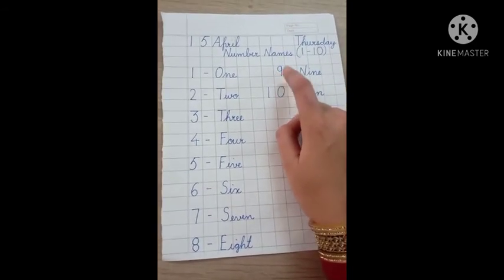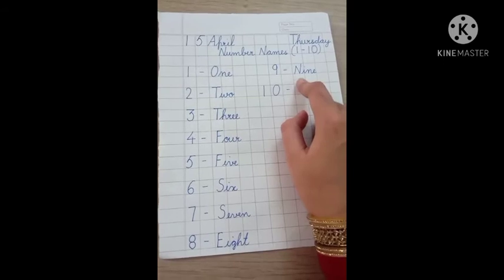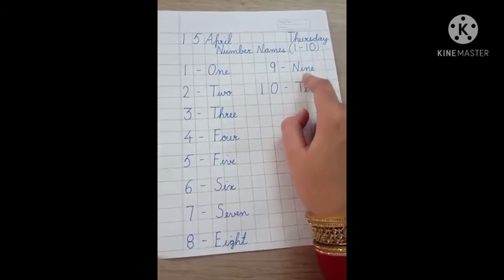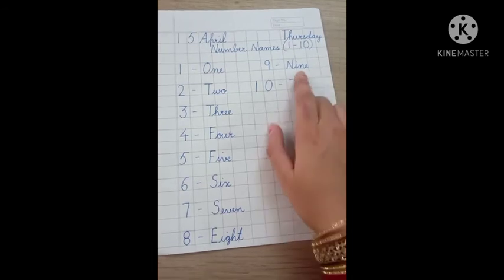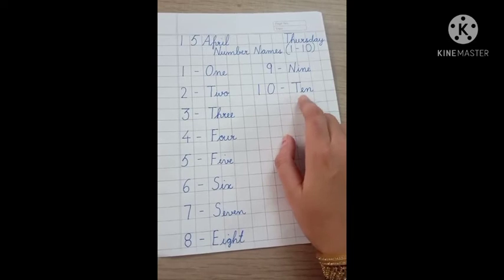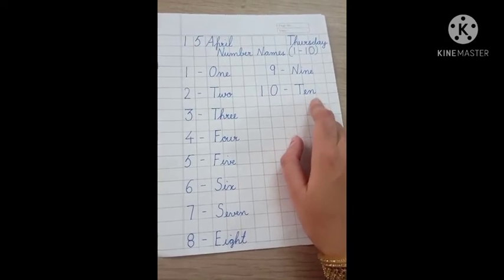Then 9. 9 hyphen, N, I, N, E, 9. Theek, N capital, I small, N small, E small. 10. 1, 0, 10. Hyphen, T capital, E small, N small. 10.